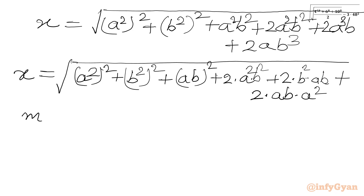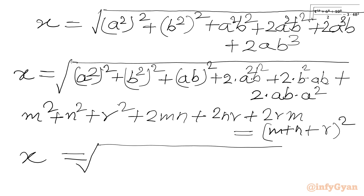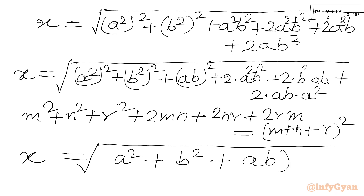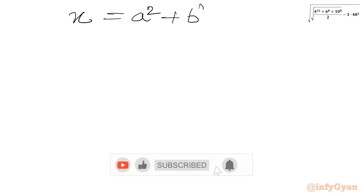The identity is: m² plus n² plus r² plus 2mn plus 2nr plus 2rm equals (m plus n plus r) whole square. Our radicand matches this form. So x equals the square root of (a² plus b² plus ab) whole square, and the square root and square cancel, giving x equal to a² plus b² plus ab.